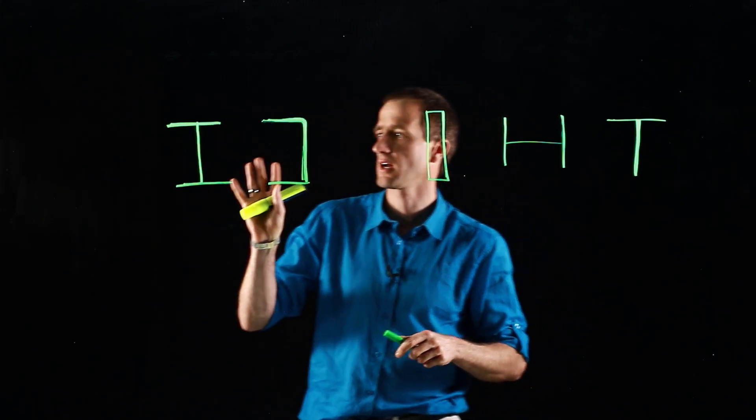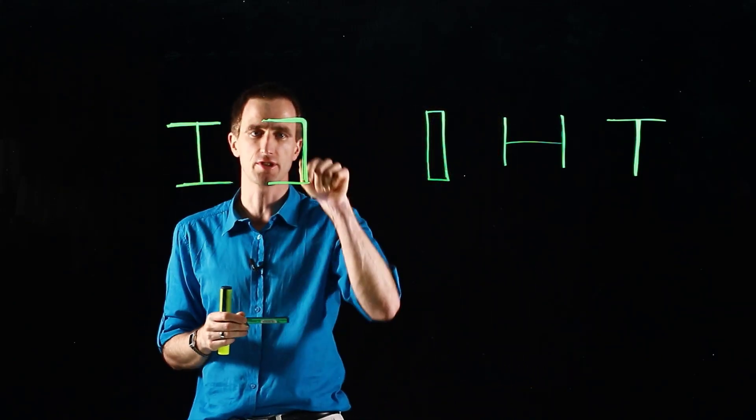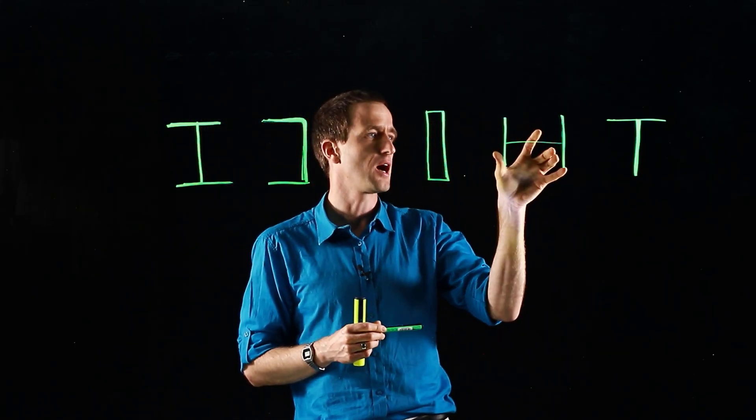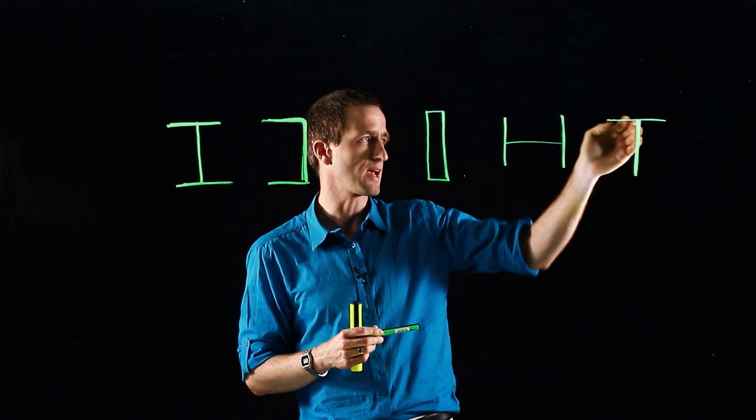If we start out with an I-beam or a channel section, just the cross sections here, and then we'll go on to a rectangular I- or H-beam about its weak axis and T-section.